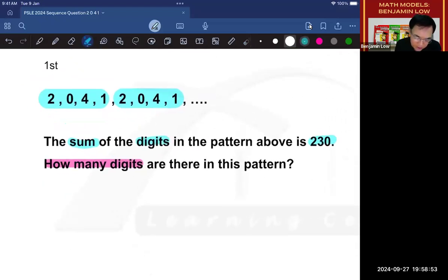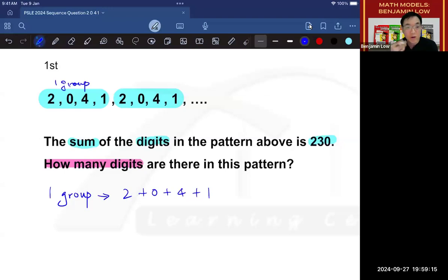Now, the next thing you want to find then is if this represents one group, then what is the value of this group? So the value of this group, you put on here, one group. You write down 2 plus 0 plus 4 plus 1. Now, of course, there's no need to add a zero, but I want to use this as a generic way of teaching so that if you do other questions, you will add all the digits. So if you add this together, you will get a total of 7. So one group has a value of 7.